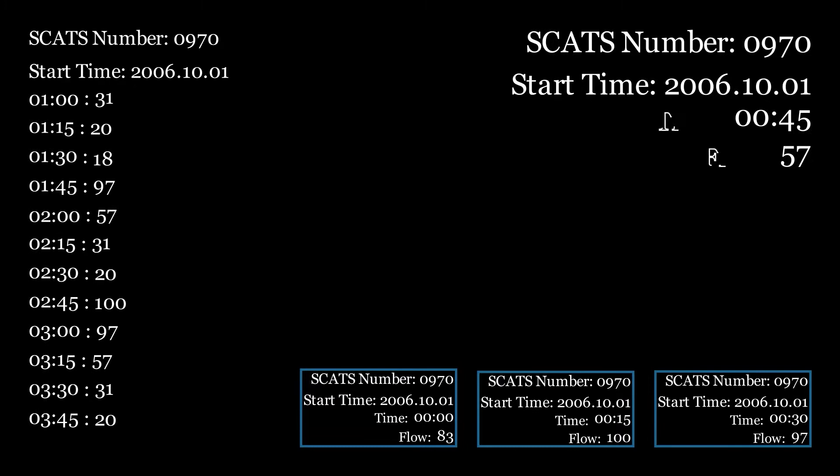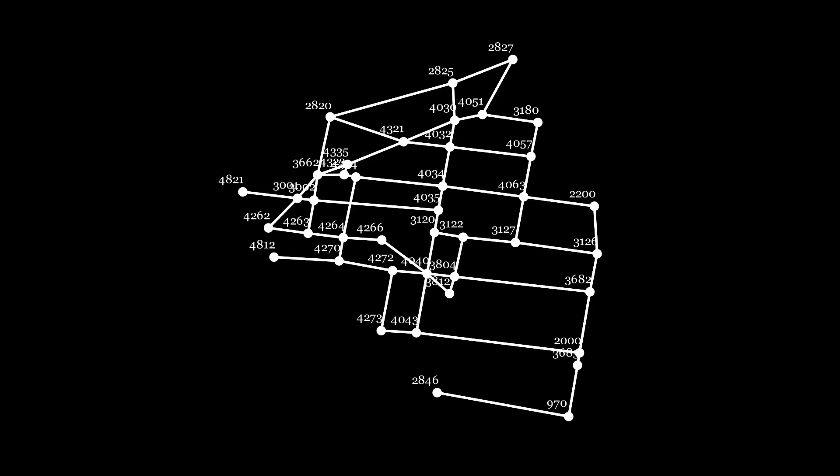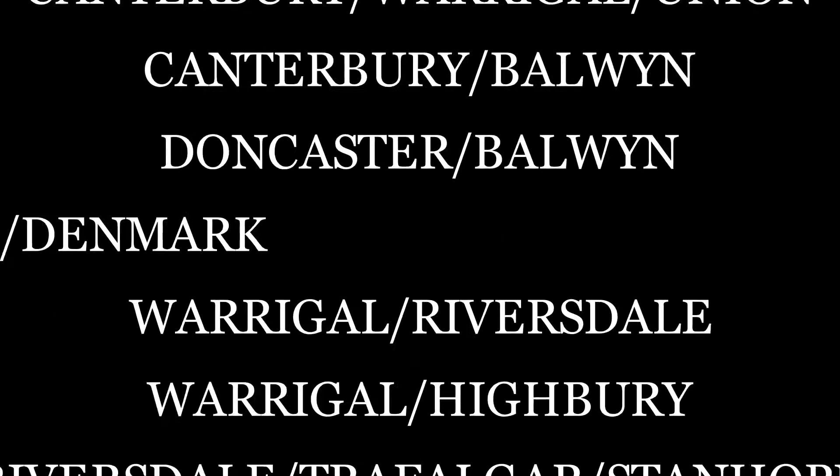Due to the immense computational requirements of machine learning, which increases with data set size, the provided data set used is limited to a set of 41 SCATS sites in the Boroondara area of Victoria. This meant we also needed to perform manual data processing to ensure the graph search is able to function properly.